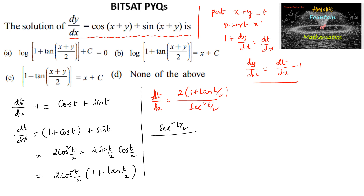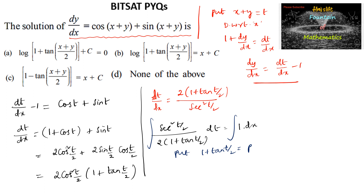Integrating both sides: secant²(t/2) divided by 2(1 + tan(t/2)) dt = dx. Put 1 + tan(t/2) = P, so differentiating, (1/2)secant²(t/2) dt = dP, which means secant²(t/2) dt = 2 dP.